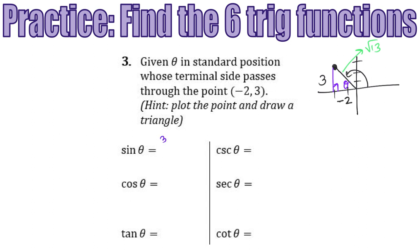And hypotenuse is the square root of 13, but we can't leave a radical in the denominator, so we're going to multiply this by √13 over √13. So sine of θ is going to be 3√13 over 13.